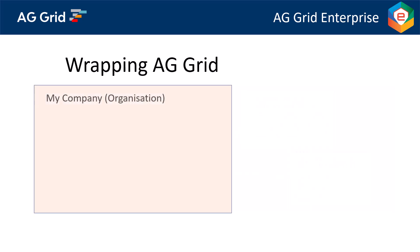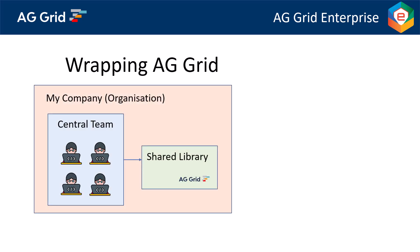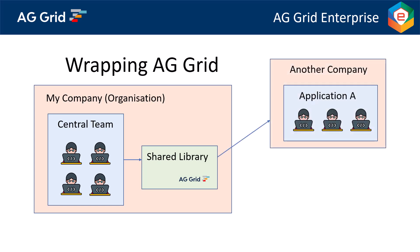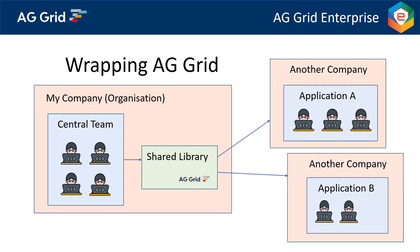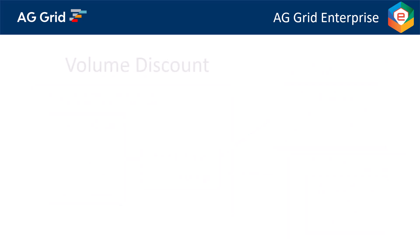If you're providing AG Grid as part of a framework or library and making it available outside of your organization, that's not covered by the standard license. You can still do it, but you'll need to get in touch with us to discuss that. There is volume discount — if you have a large number of developers or deployments, please get in touch and we will give you a quote. The prices go drastically down as the number of developers and deployments go up.